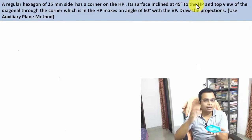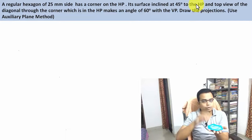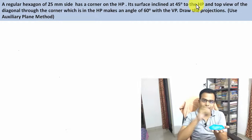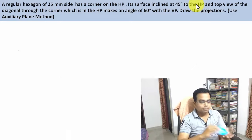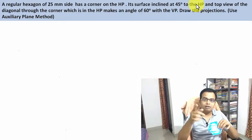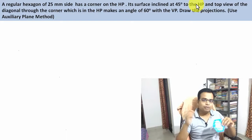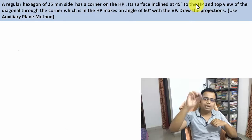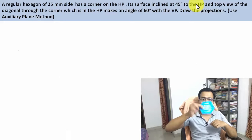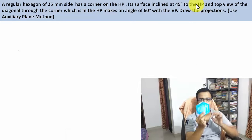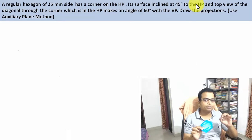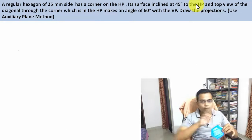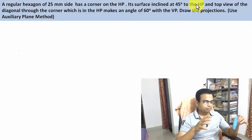The initial assumption is that the entire surface will be resting onto the horizontal plane. We need to think from where we can see the true shape of this surface. The true shape can only be seen from the top, so we begin by making the top view first, drawn below the XY line.